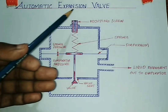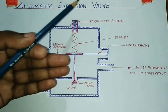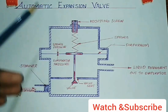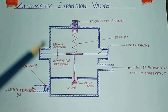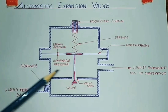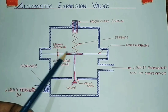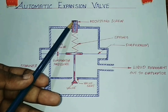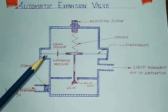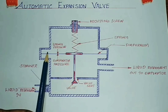For the automatic expansion valve, we use high pressure liquid and low pressure liquid through the expansion valve. The main parts of the automatic expansion valve are the needle valve, valve seat, metallic diaphragm, spring, and adjusting screw.